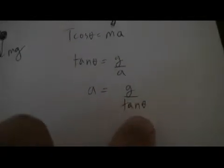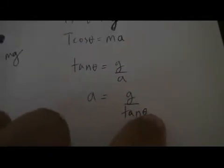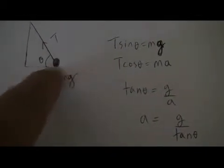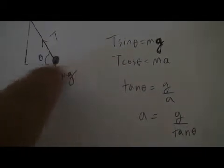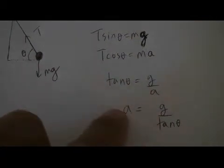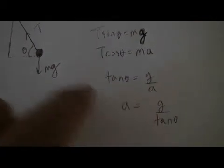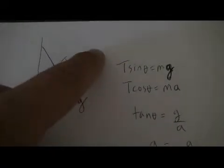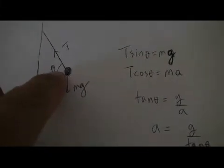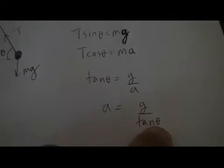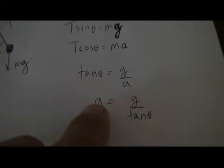And therefore, a is equal to g over tan θ. The greater the angle of the swinging object with respect to the horizontal, the greater the angle, the greater the tangent will be, and therefore the less the acceleration. The less the angle, that means it will have swung out further out. That angle will be a smaller number, and therefore the less the tangent, and therefore the greater the acceleration.